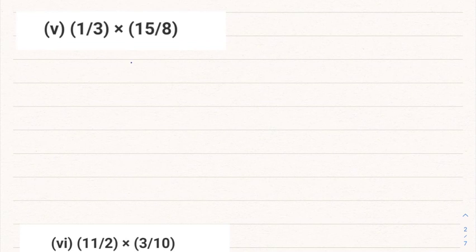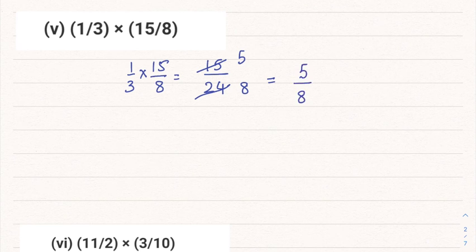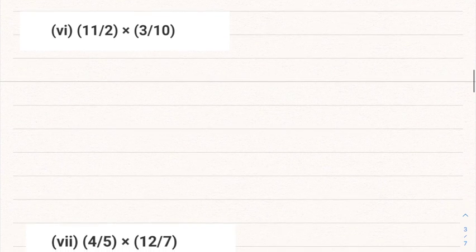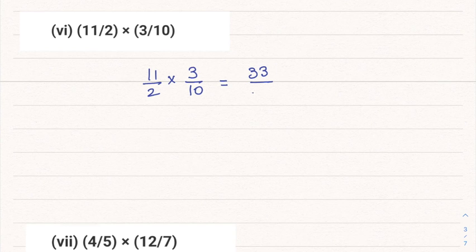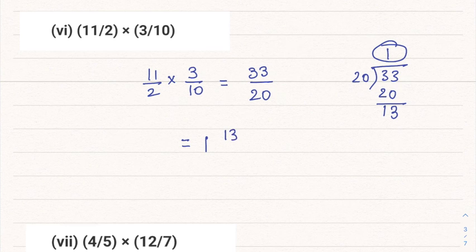Part 5: 1/3 multiplied by 15/8. That is 1 into 15 = 15, and 3 into 8 = 24. Now 15 and 24 can both be simplified — they are in the table of 3 — so we cancel by 3, giving 5/8. Part 6: 11/2 multiplied by 3/10. 11 threes are 33 and 2 tens are 20, giving 33/20. Dividing: 20 ones are 20 and the remainder is 13, so the answer is 1 and 13/20.